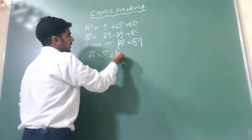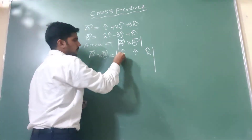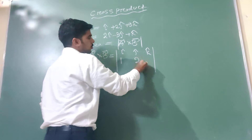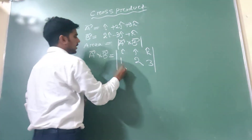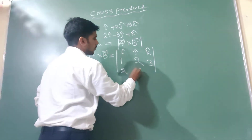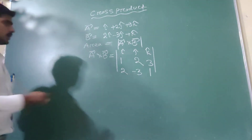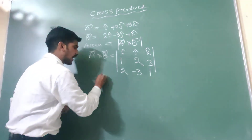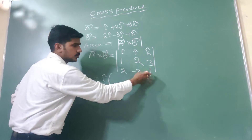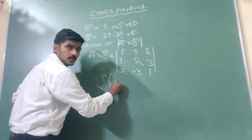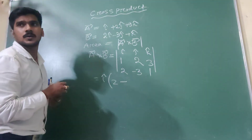Now solve A vector cross B vector. Write I cap, J cap, K cap. Components of A vector: 1, 2, 3. Components of B vector: 2, minus 3, 3. For I cap: 2 into 3 minus minus 3 into 3 equals 6 plus 9 equals... then minus J cap: 1 into 3 minus 2 into 3 equals 3 minus 6 equals minus 3... minus minus equals minus 9.